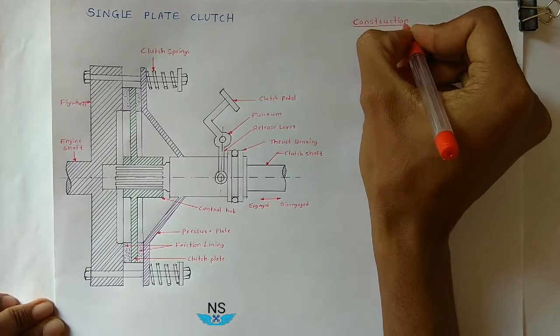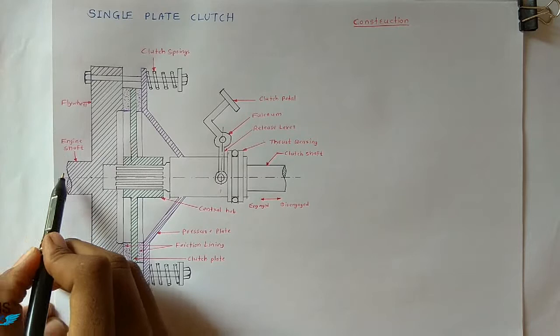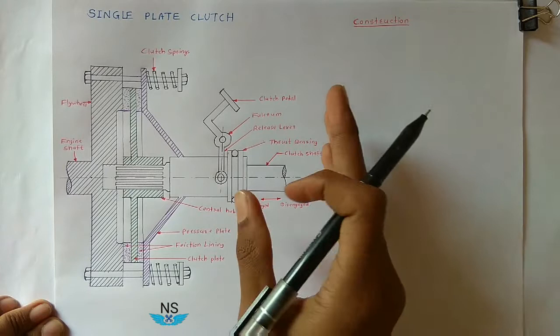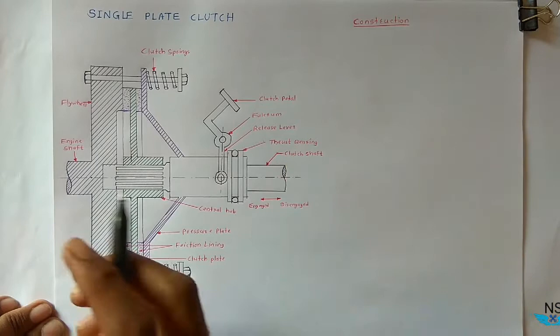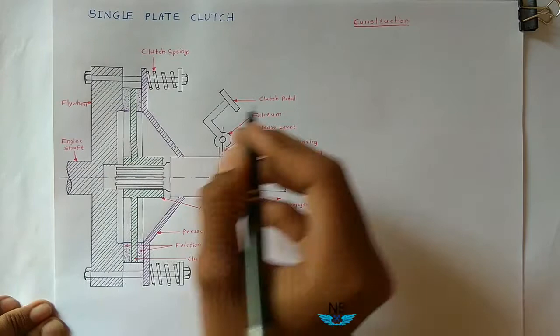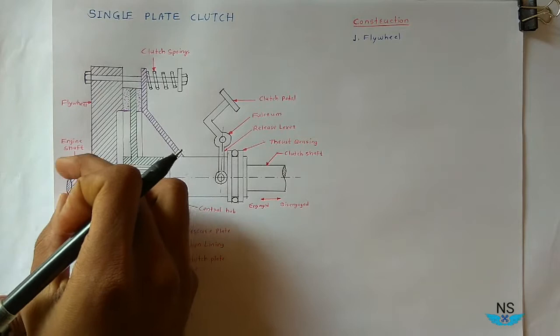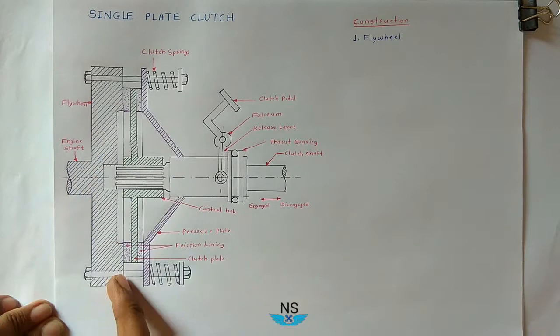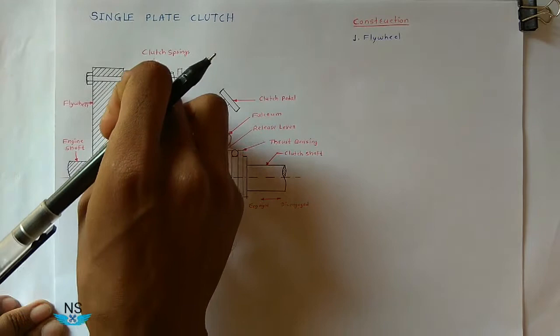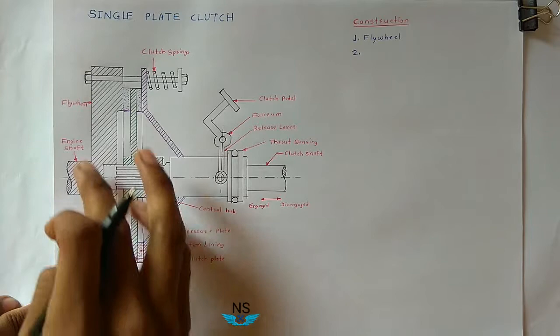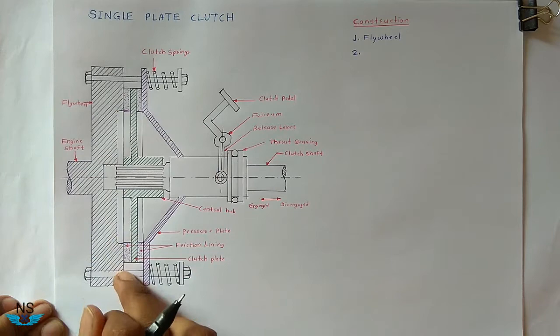On this side of the clutch there is the engine, so from the engine this shaft is coming, that is called the engine shaft. On the other side of the clutch there is the gear box with its input shaft. On the engine shaft, the first part is the flywheel — a circular disc of heavy mass attached to the engine shaft or crankshaft. One side of the flywheel has a flat surface which engages with the clutch plate.